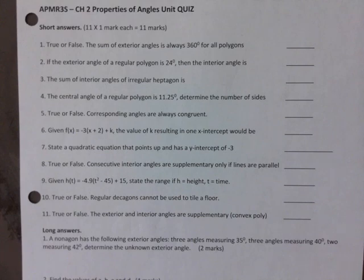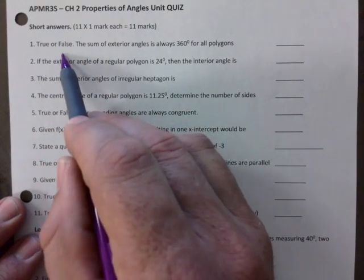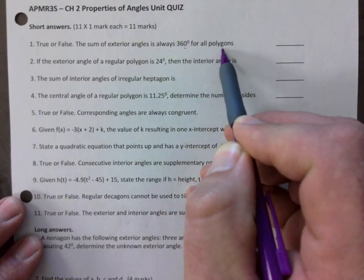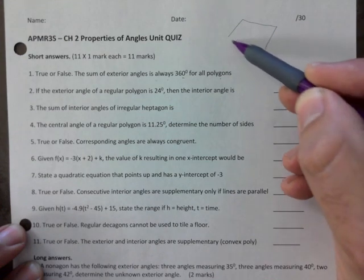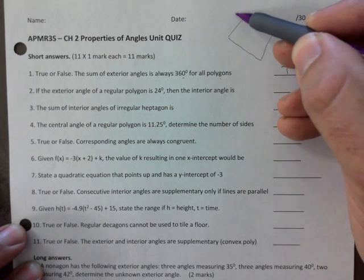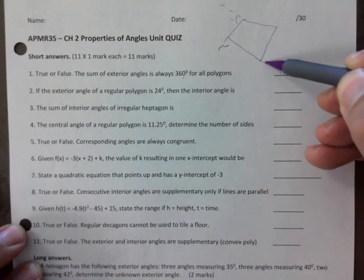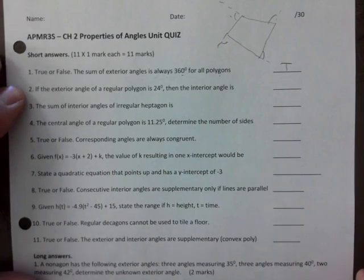This is a quiz review. True or false: the sum of exterior angles is always 360 for all polygons. That is true. It doesn't matter how many sides it has or what shape it is — if you add up all the exterior angles, they always add up to 360, no matter how many sides, and no matter if it's regular or irregular.